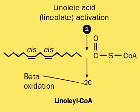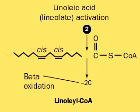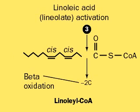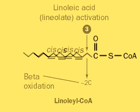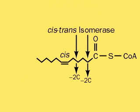Three beta-oxidation cycles cleave the first six carbons before encountering an unsaturated pair of carbons. A cis-trans-isomerase changes the orientation of the double bond, and the next two carbons are then removed by further beta-oxidation.